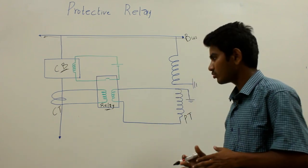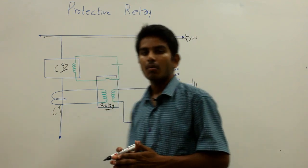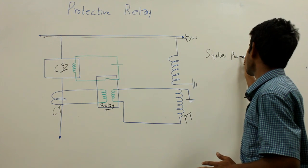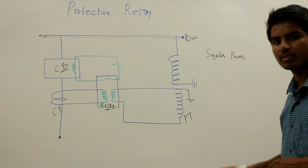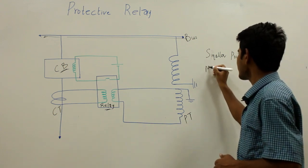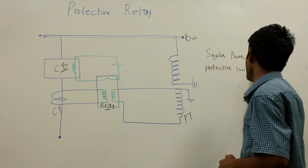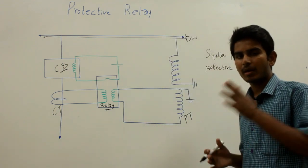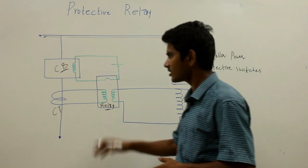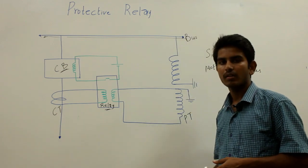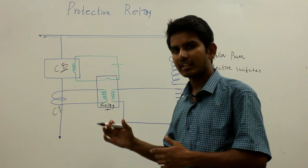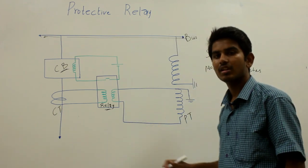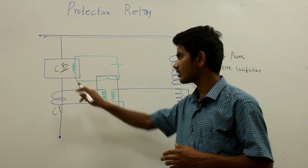For smaller power applications, the relays themselves act as protective switches to isolate the faulty portion from the rest of the healthy power system. The relays are also used as sensing devices or protective devices which sense any imbalance or abnormal condition occurring in the power system, and thereby send a signal to the circuit breaker, which then isolates the faulty portion. So for smaller power applications relays act as the protective switches directly, and for higher power applications they take the help of circuit breakers.